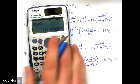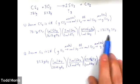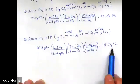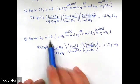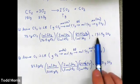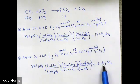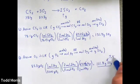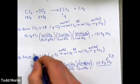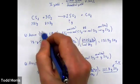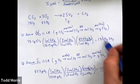Now we have two numbers: 131.4 grams of SO2 if CS2 is the limiting reactant, and 111.8 grams of SO2 if O2 is the limiting reactant. The smaller value, 111.8 grams, is the correct theoretical yield — we can't produce 131.4 grams if the reaction stops at 111.8 grams. So O2 is the limiting reactant, 111.8 g is our theoretical yield, and the 131.4 g figure has no practical meaning.